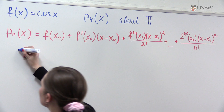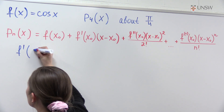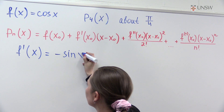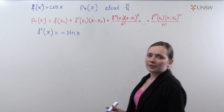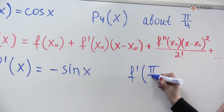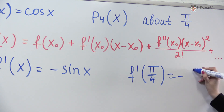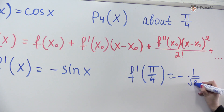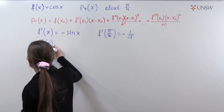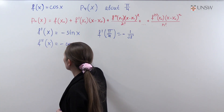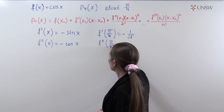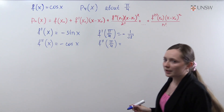So let's do it. The first derivative is obviously minus sine x. The value of the derivative at the point pi over 4 will be minus 1 over square root of 2. The second derivative is minus cos x, and the value of the second derivative at the point pi over 4 will again be minus 1 over square root of 2.